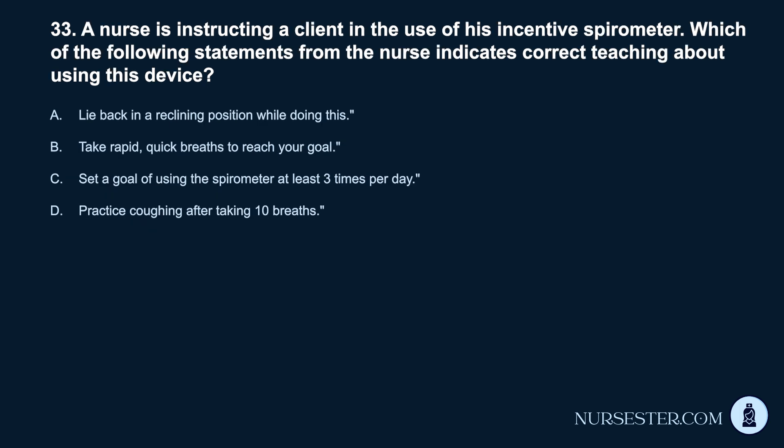Question 33. A nurse is instructing a client in the use of his incentive spirometer. Which of the following statements from the nurse indicates correct teaching about using this device? A. Lie back in a reclining position while doing this. B. Take rapid, quick breaths to reach your goal. C. Set a goal of using the spirometer at least 3 times per day. D. Practice coughing after taking 10 breaths.